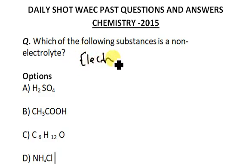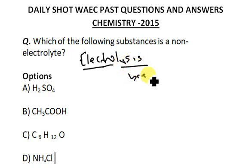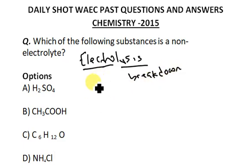Let's give a short summary of what electrolysis is about before we answer this question. According to the word, 'electro' means electricity, and 'lysis' means breakdown. So electrolysis is the chemical breakdown of a compound which occurs when electricity is passed through the molten state or liquid state of that compound.